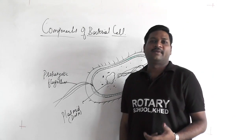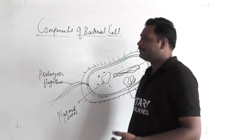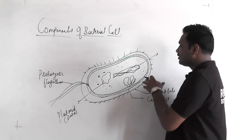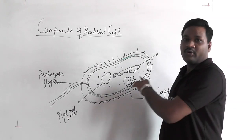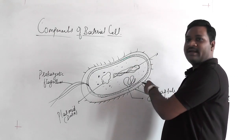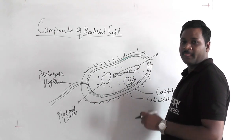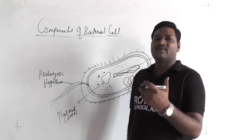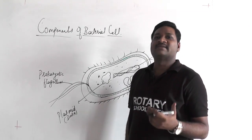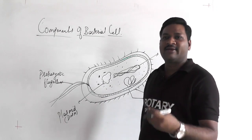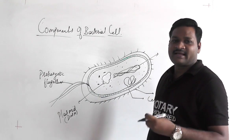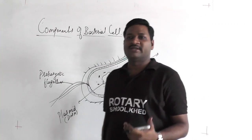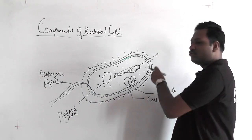Good morning everyone. In the previous session we discussed about some components of the bacterial cell. Today we are going to discuss a few more components along with the structure. You can see the typical structure of a bacterial cell. We have already discussed the cell wall, capsule, mesosome, plasma membrane, cytoplasm, and pili — how pili helps in sexual reproduction.